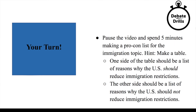Pause the video and spend five minutes making a pro-con list for the immigration topic. Make a table: one side, the pro side, should be a list of reasons why the U.S. should reduce immigration restrictions. The other side, the con side, should be a list of reasons why the U.S. should not reduce immigration restrictions.